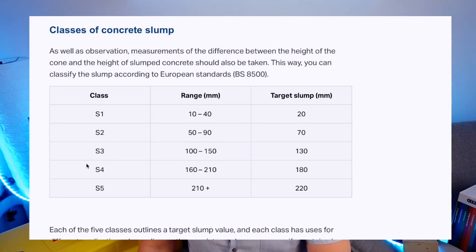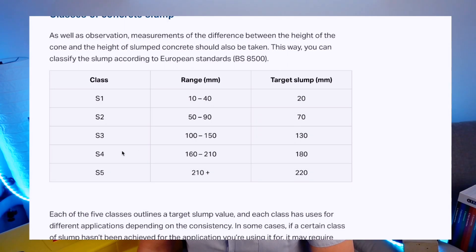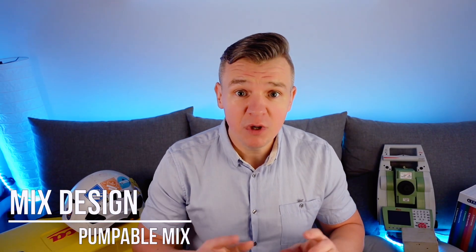For S3, we aim for 130mm but are good to go between 100 and 150mm. If you measure 95mm targeting S3, you're probably still good to go but need to be careful. From a site engineering perspective, you'll often be looking for a pumpable mix — especially when using a concrete pump or a long pump line. You want to make sure you've got a pumpable mix to avoid any blockages on site, which really do happen sometimes. Work out the mix details with your concrete supplier and get it approved by the designer.